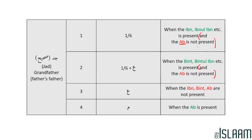The extra clause says 'and the Ab is not present.' Then the Jad would receive one-sixth. Like it was mentioned in the previous lesson, the table of Ibn al-Ibn al-Ibn etc. is present and the Ab is not present. The students should be able to say the entire table off by heart. Condition number 1: when the Ibn al-Ibn al-Ibn etc. is present and the Ab is not present. Condition number 2: exactly the same as it was in Ab, except that this time we've added 'and the Ab is not present.'